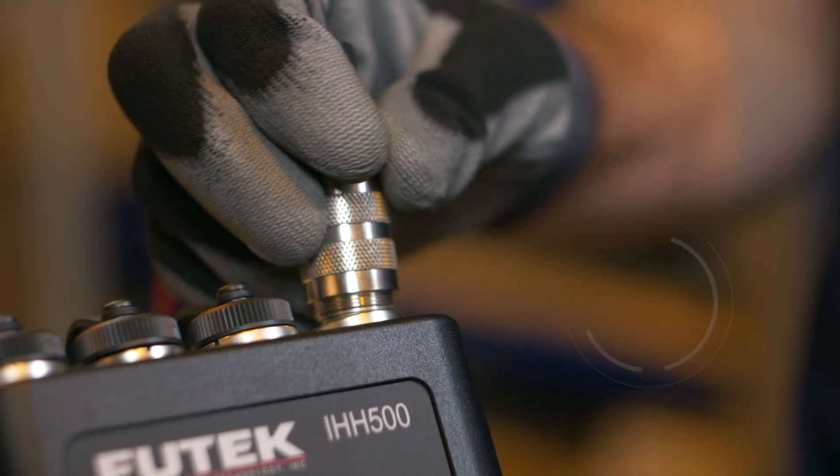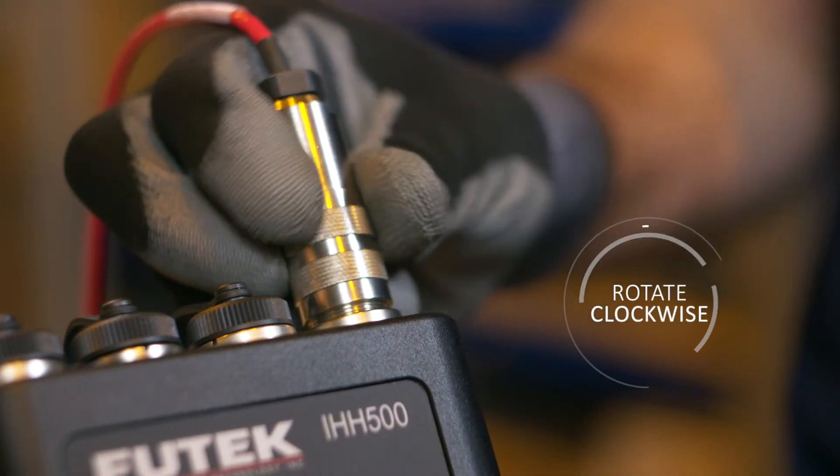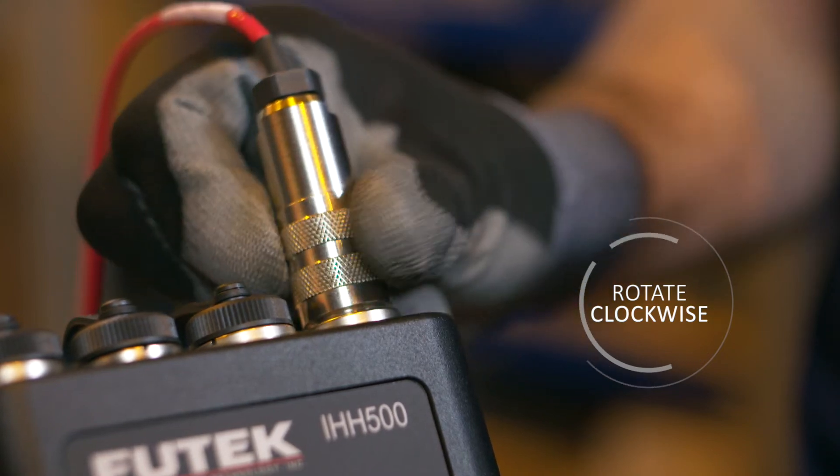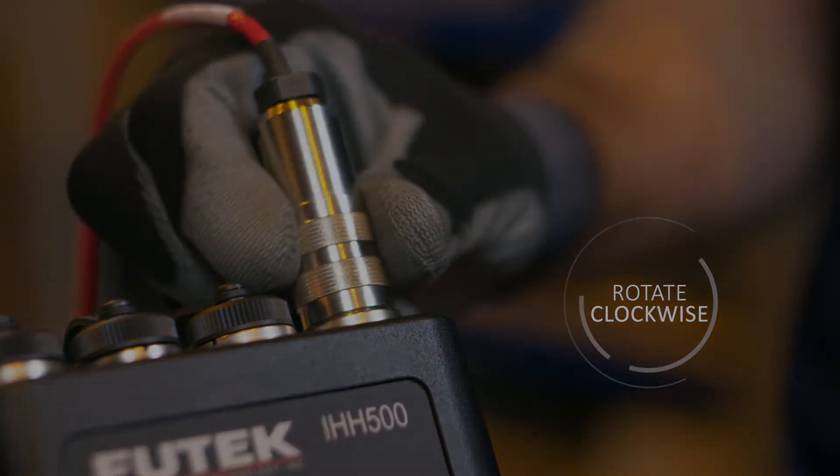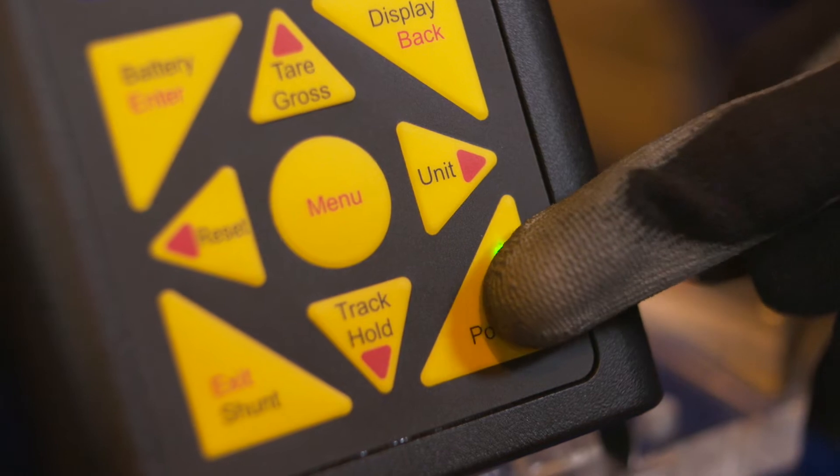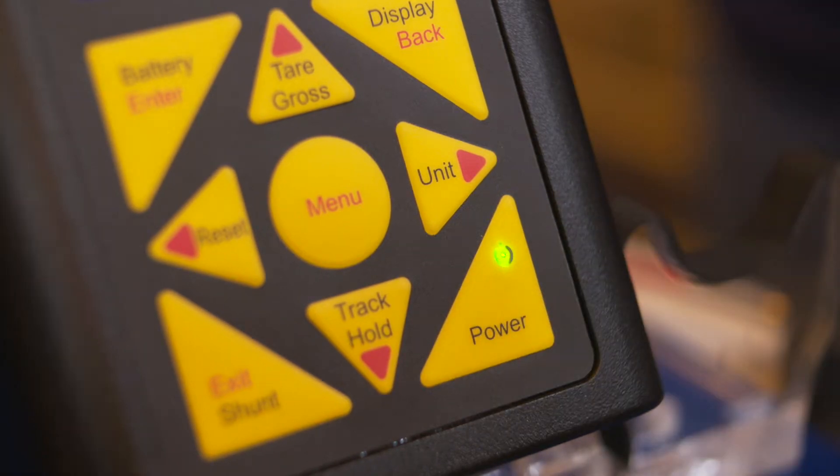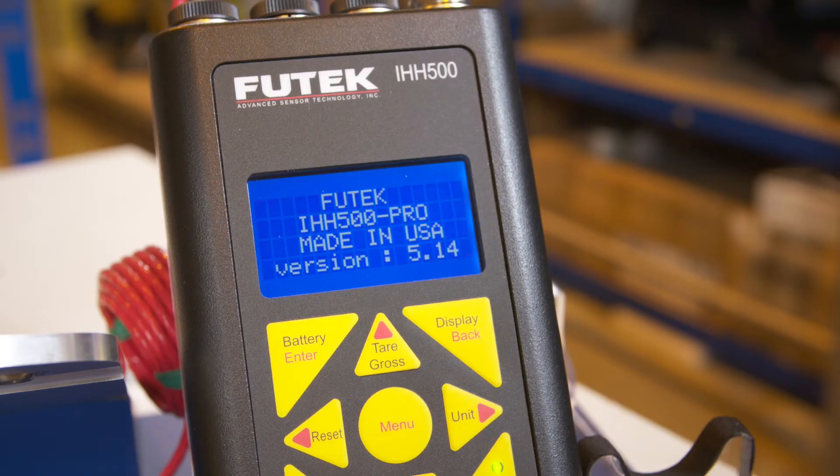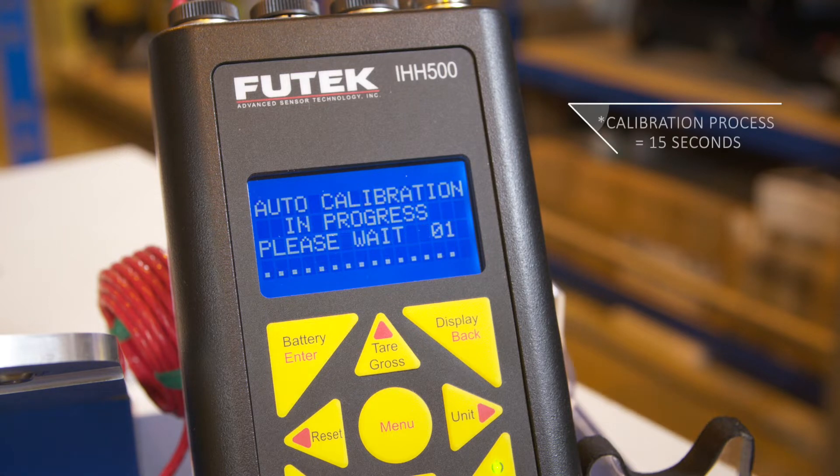First, connect the load cell to the electronic display, turning the collar clockwise to secure the connection. Power on the display by pressing and holding the power button. The display identifies the attached load cell and begins calibrating.